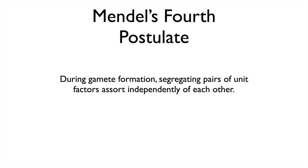This is Mendel's fourth postulate. He says during gamete formation, segregating pairs of unit factors — in our example the green locus versus the wrinkled locus — segregate independently and assort independently of each other. This is a long-winded way of saying there's a 1:1:1:1 ratio in gamete production, that all combinations are equally likely. Each one has a 25% likelihood. It's not like green always likes to be with wrinkled — it's equal opportunity.